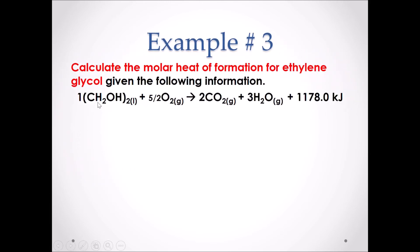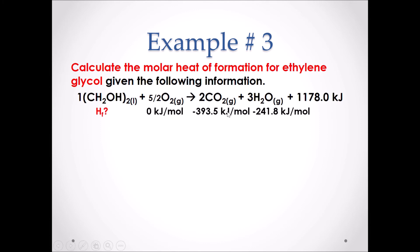Example 3: Calculate the molar heat of formation for ethylene glycol given the following information. We have a balanced chemical equation with the enthalpy change represented as a term on the product side — meaning it is a negative value representing an exothermic reaction. Ethylene glycol is not in the Chemistry 30 data booklet, so we must perform Hess's Law Mathematical calculations and input the heats of formation of each substance.